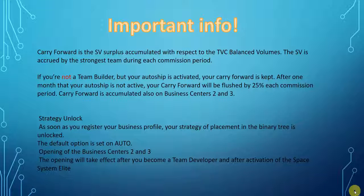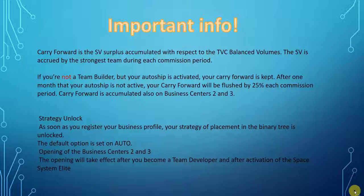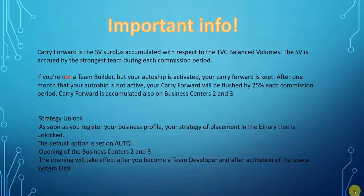Strategy unlocked: as soon as you register your business profile and sign up, the placement strategy in your binary tree is unlocked and you can choose to start placing people on your right leg or your left leg. When you first sign up, it's set on auto — you'll want to go in and choose which leg. If you don't make a choice, it will automatically start with your team leg and alternate. Opening your second and third business centers requires you to be team developer and to have purchased a Space System Elite package.